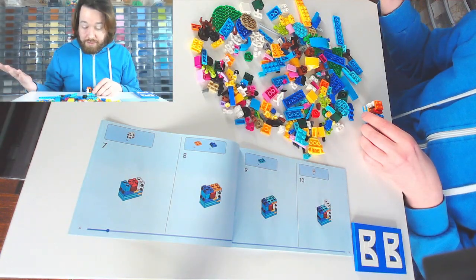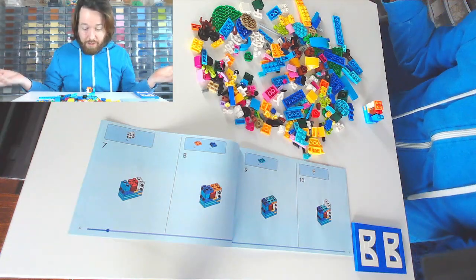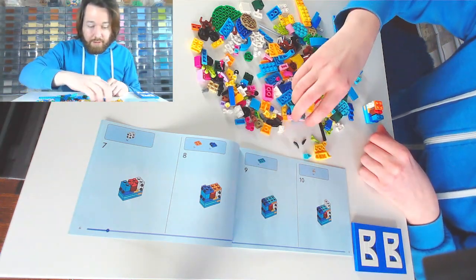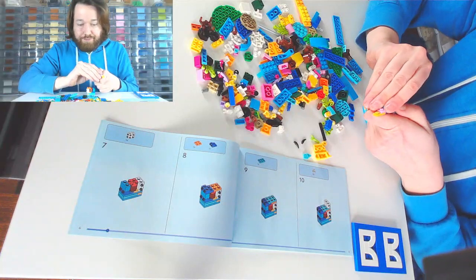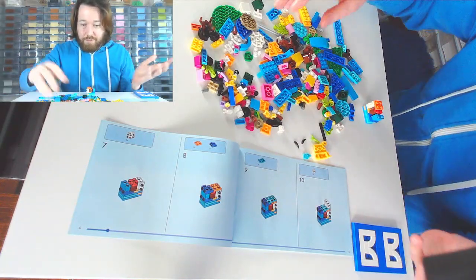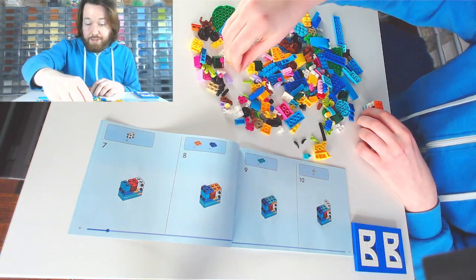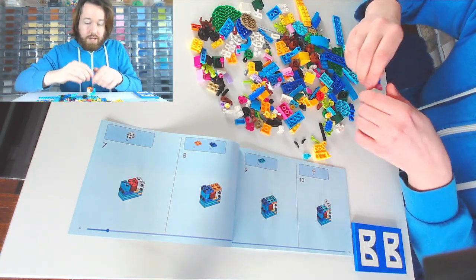Where did that piece go? And that's the other thing with the creator 3-in-1s you kind of have to dump them all out and figure it out because they don't have numbered bags because they're different for each build. Here it is.